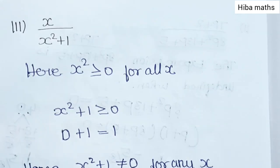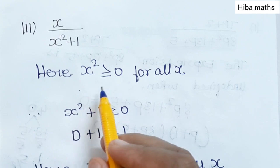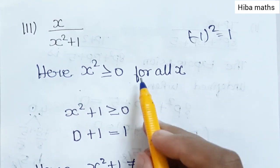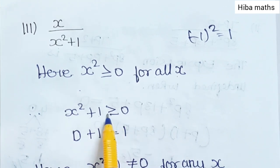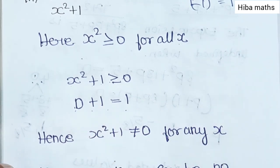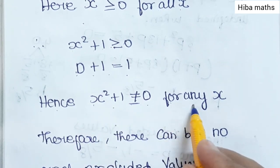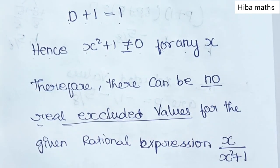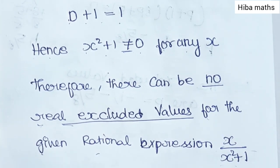Third question is x by (x² + 1). Here x² + 1 cannot equal 0 for any value of x, because x² is always greater than or equal to 0, so x² + 1 is always at least 1. Therefore there can be no real excluded value for the given rational expression x by (x² + 1).